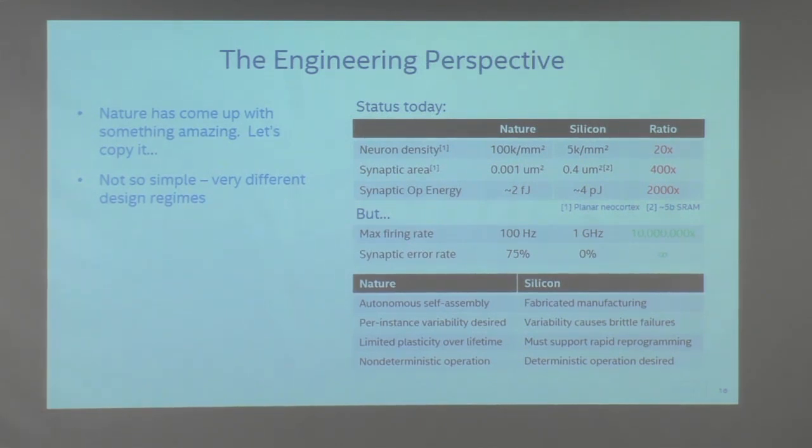Luckily we have some advantages. The maximum firing rate in nature: neurons fire at really slow speeds — millisecond time scales, about 10 milliseconds per spike period — compared to gigahertz frequencies in CMOS where nanosecond periodicity is not hard at all. That's a really good advantage. In particular, we can trade off multiplexing to offset the area disadvantage. Using best-known methods like pipelining and multiplexing, you can reuse the same circuit many times and effectively shrink down area by that multiplexing factor.